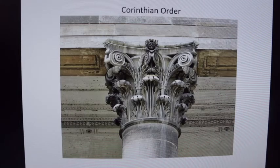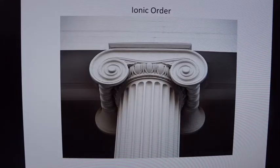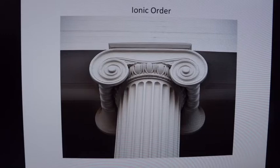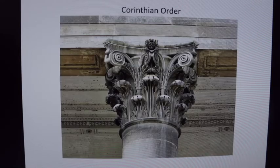The next order which developed was the Ionic order. The Ionic order has that scroll at the top — that scroll is called a volute. This tends to be a more elegant, smaller column, although it's been used on big buildings. After the Ionic order came the Corinthian order. The Corinthian order is the most complex and the most decorative.